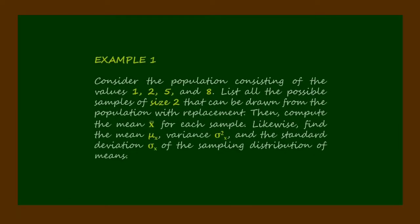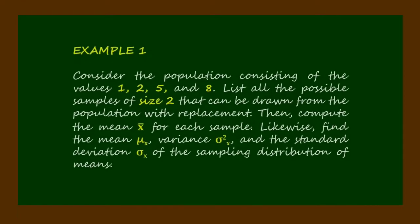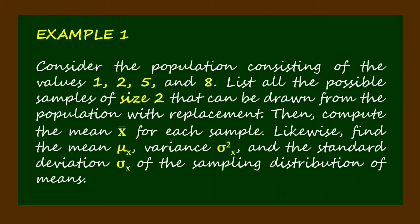Now let's have Example 1. Consider the population consisting of the values 1, 2, 5, and 8. List all the possible samples of size 2 that can be drawn from the population with replacement, then compute the mean bar x for each sample. Likewise, find the mean mu sub x, variance sigma squared sub x, and the standard deviation sigma sub x of the sampling distribution of means.